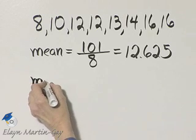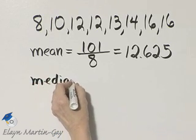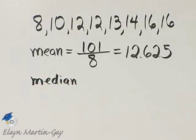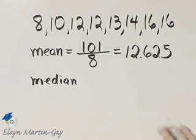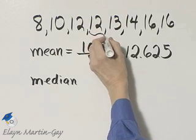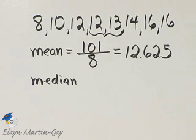Now let's find the median. How do you find the median? The median is the middle number. Notice I have 8 numbers this time, so there's no single middle number, but there's two middle numbers.